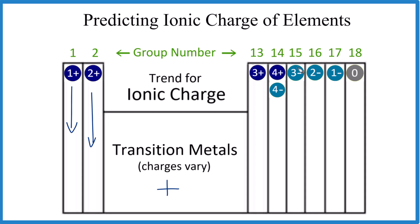Group 14 is 4+, and then we go down: 3 minus, 2 minus, 1 minus, and 0. All of these — the noble gases — are neutral.